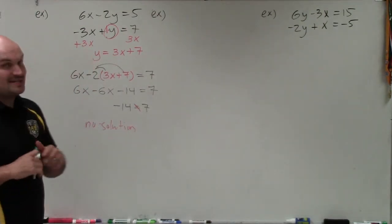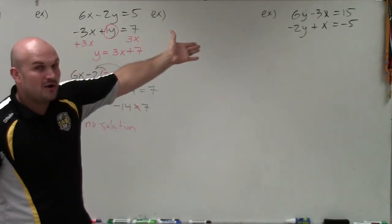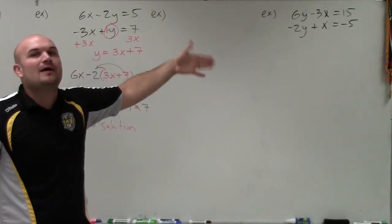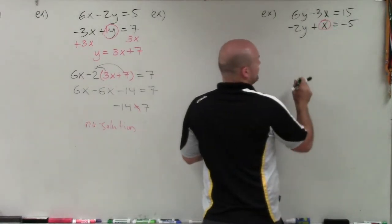So hopefully, you understand that. You listened to me before. I said that we're going to do one with no solution and one with infinite many solutions. So we know this one's going to have infinite many solutions. But how is that going to look? So again, I'm going to identify my variable that has a coefficient of 1, which is this x.